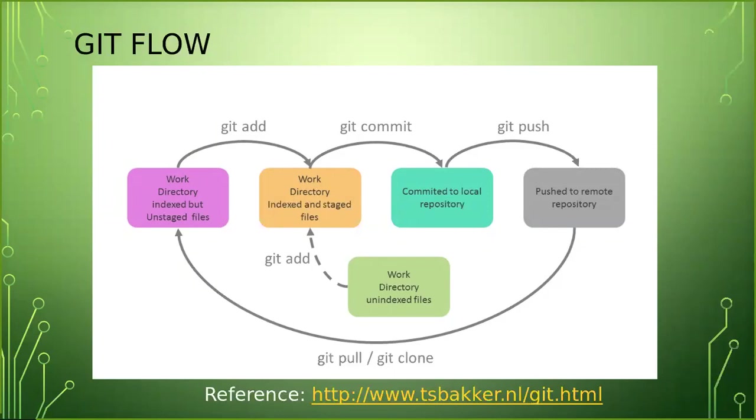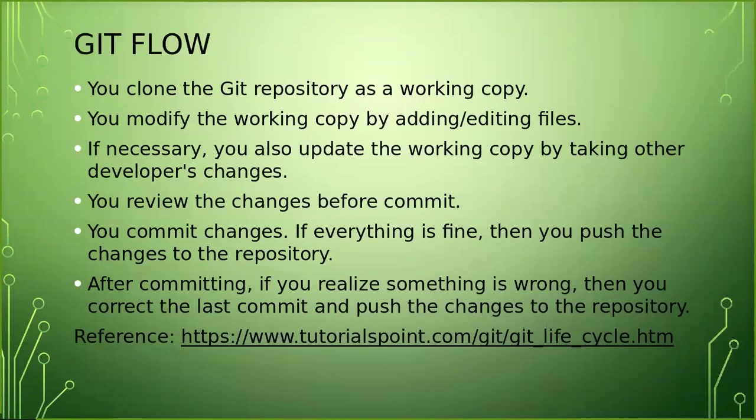Considering you have access to the remote repository, a Git flow normally goes like this: you clone the Git repository as a working copy — either from your own user repository or a company repository. Then you modify the copy by adding or editing files, and you update the working copy by taking developer changes. Before committing, you review everything and commit the code. After committing, you push your code to the remote repository. If you find something after committing, you can revert, make changes again, commit, and push the code back to the repository.